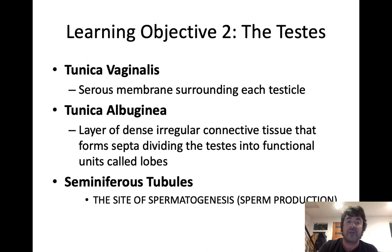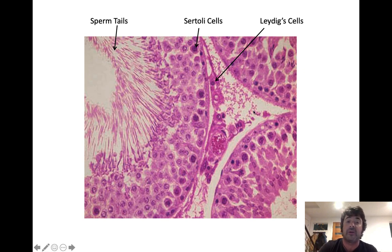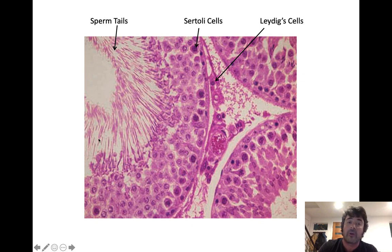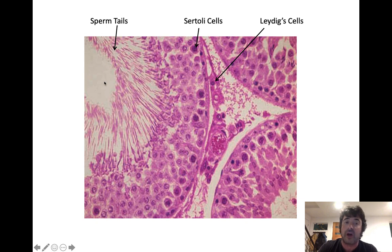If you look at the seminiferous tubules under a histological image, you'll see individual tubules. Sperm come out kind of tail first — those are the flagella of the sperm that allow them to swim. They pop out tail first with their head last and get swept along with the fluid current in those ducts. These are not mature sperm yet — they don't mature until they get to another structure we'll talk about in a moment.